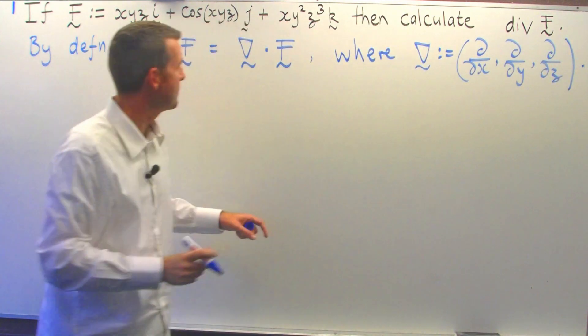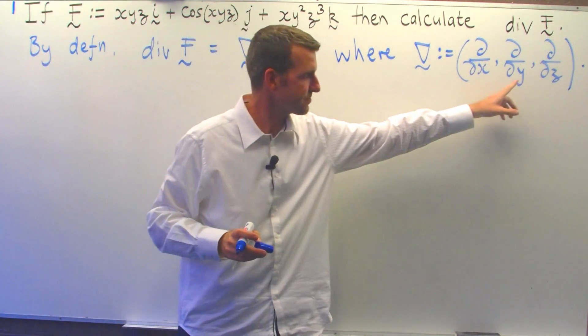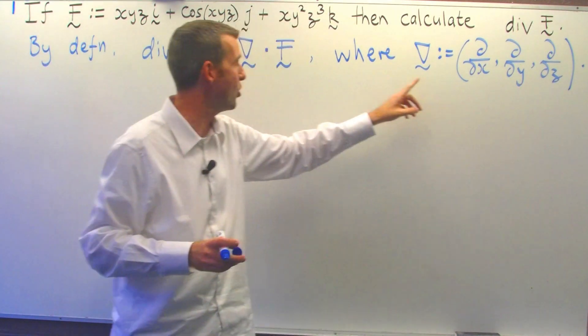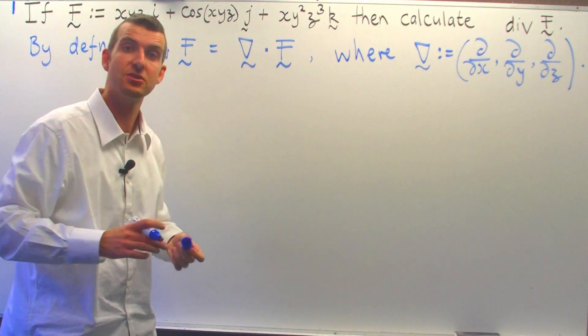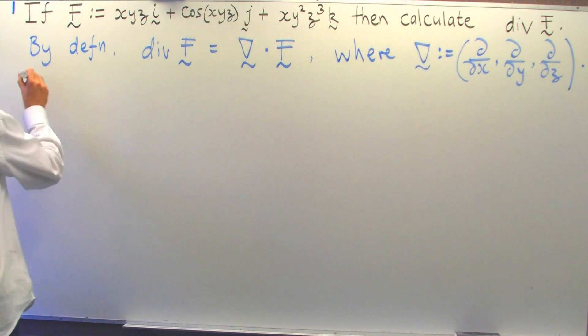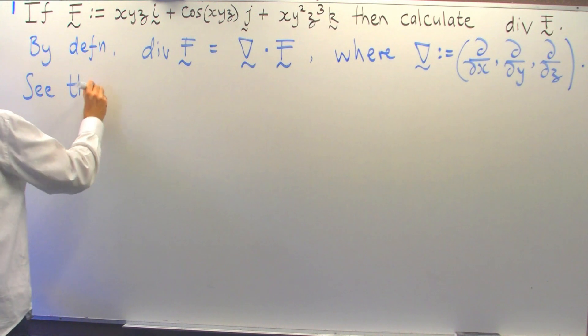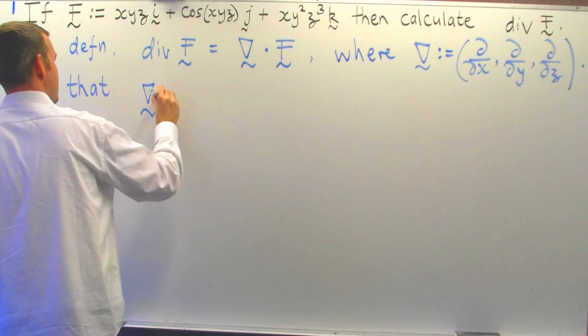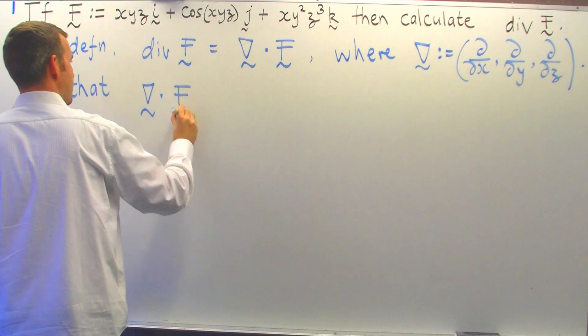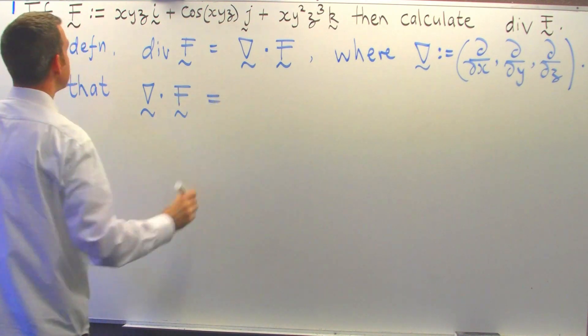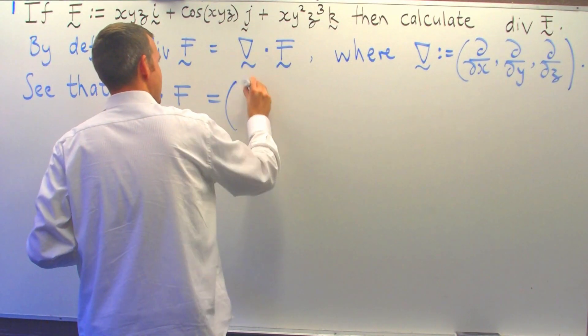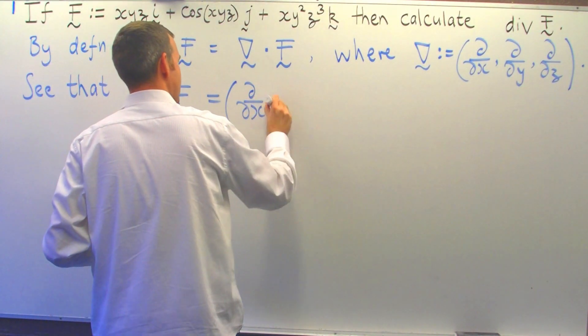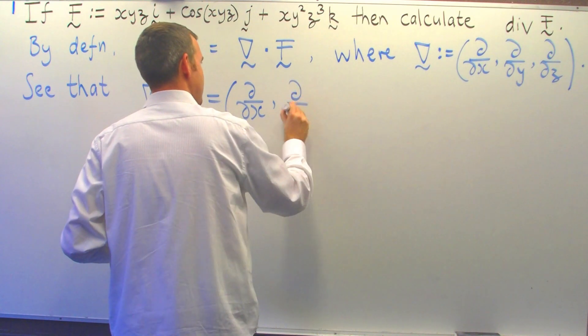So when we talk about divergence, we mean that this symbolic operator is operating on our vector field through a dot product. The divergence of our vector field will just be the following.